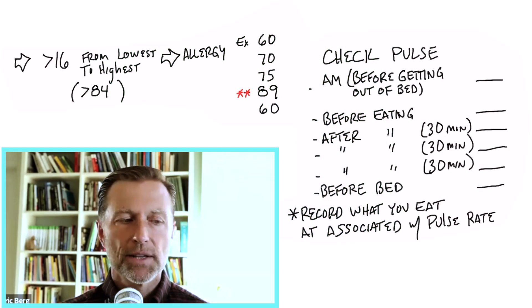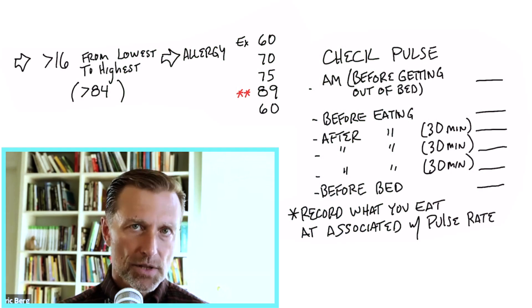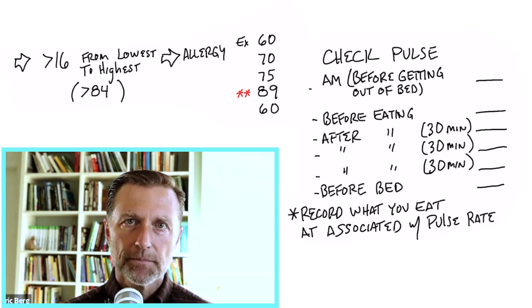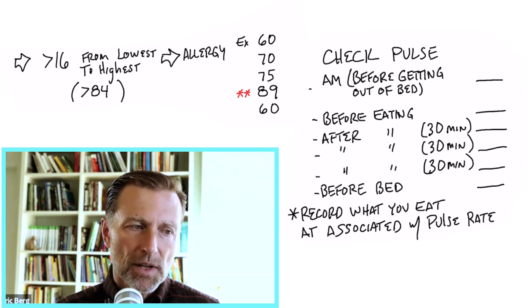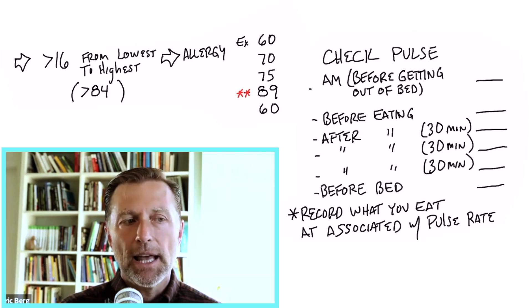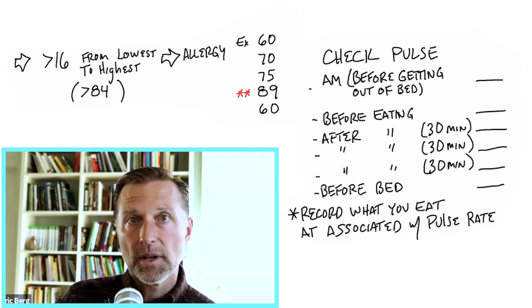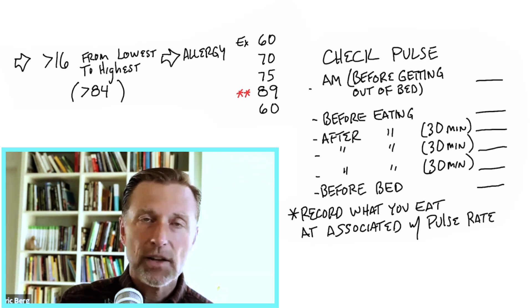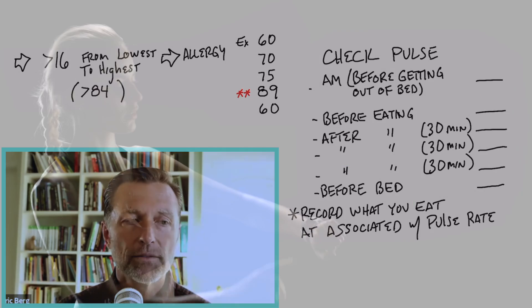Now what's happening is we're getting this sympathetic nervous system reaction to the food, which is like the fight or flight, which is increasing the pulse rate because it's increasing the autonomic nervous system. And it's probably creating a lot of stress in the liver because the liver is trying to get rid of this allergy, right? So we have that involvement.